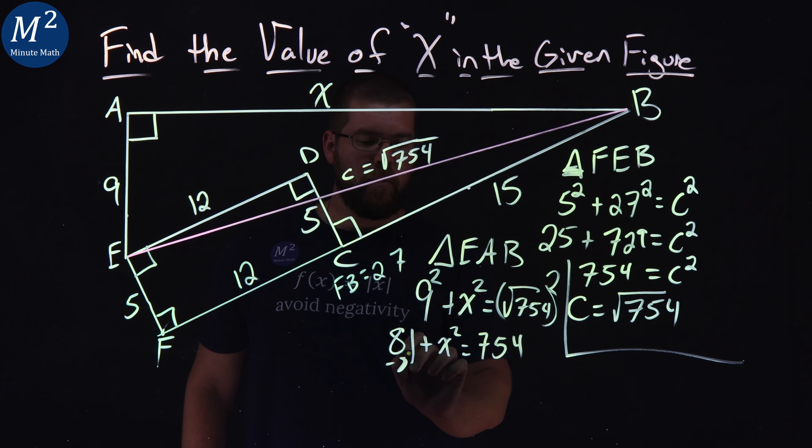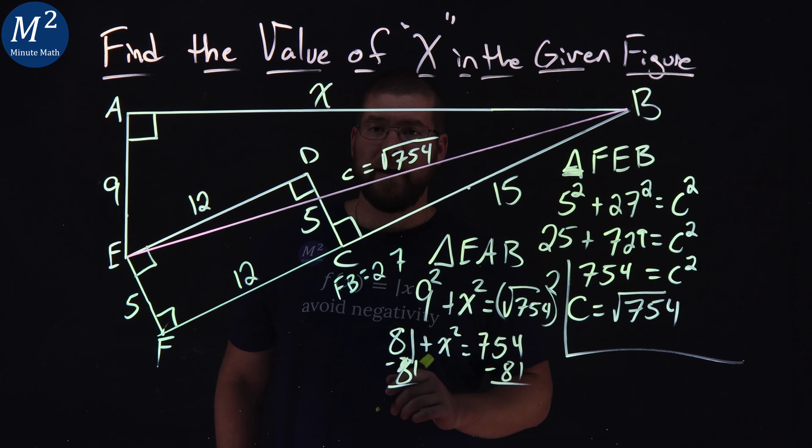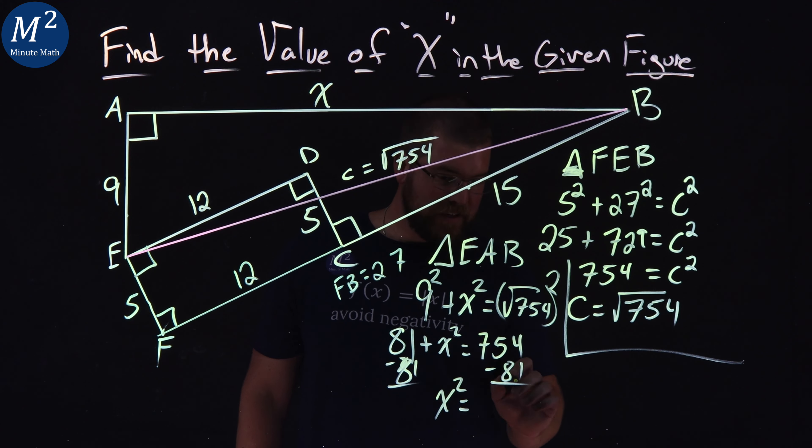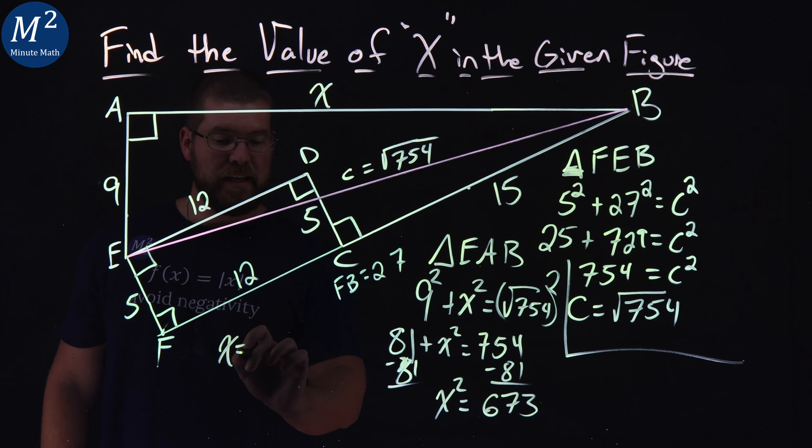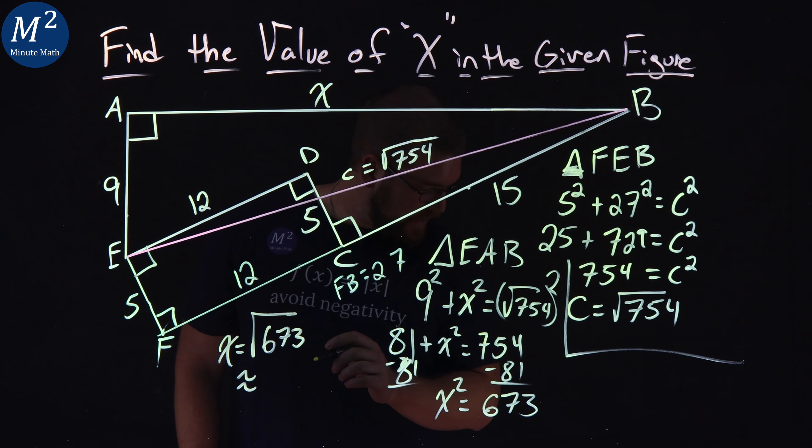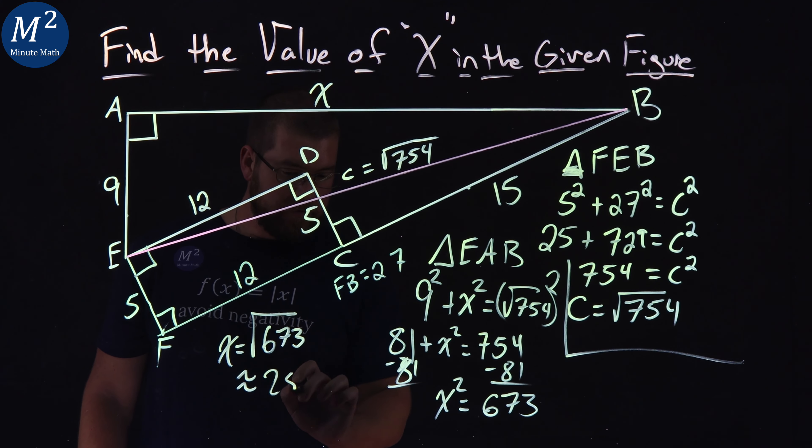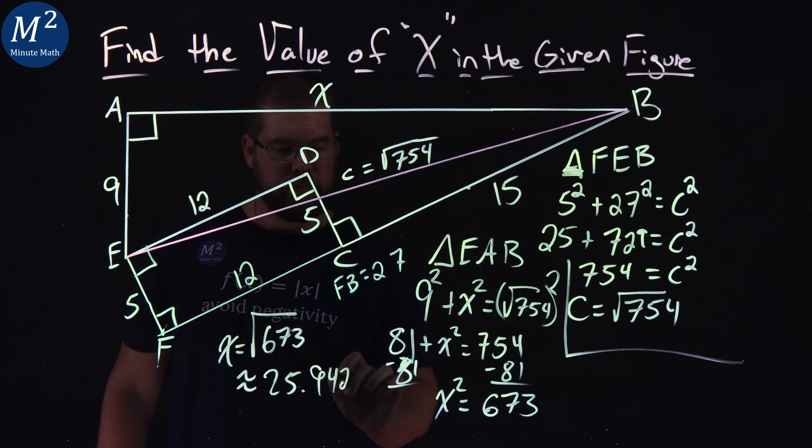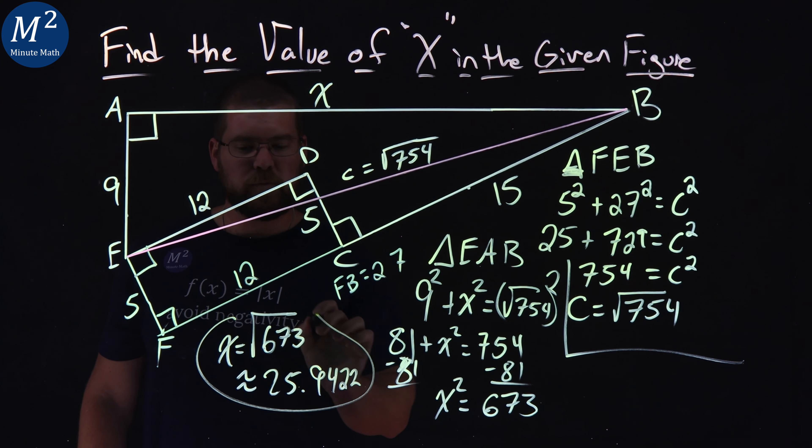We want to subtract 81 from both sides. And what do we have? X squared equals 673. From there, X is equal to the square root of 673. And as a decimal, it approximates 25.9422, approximately. But I like the square root better.